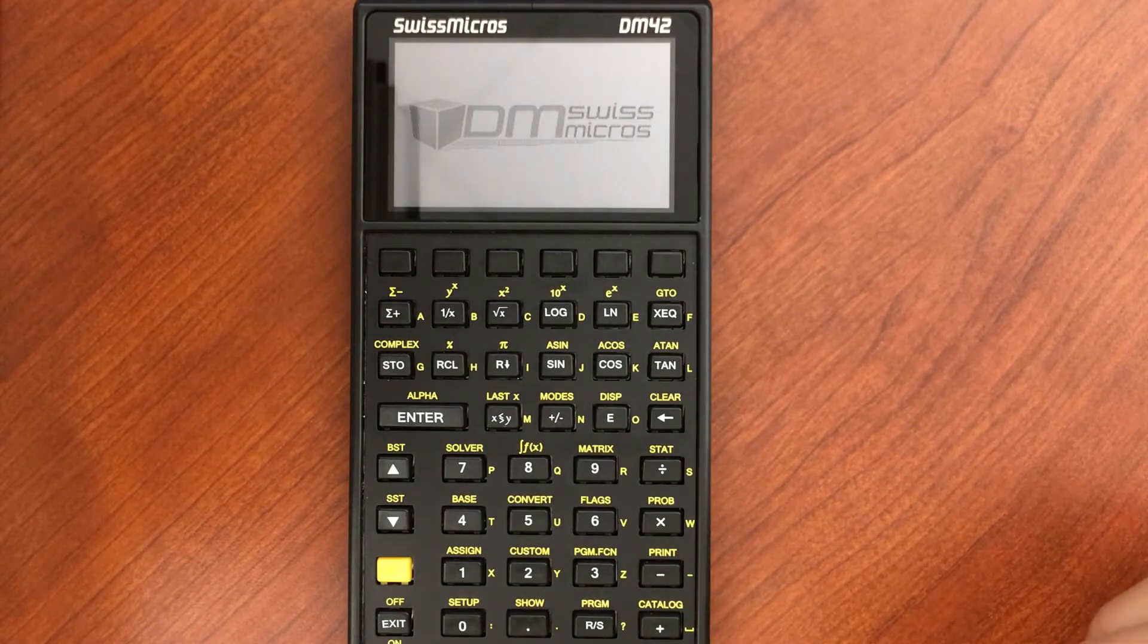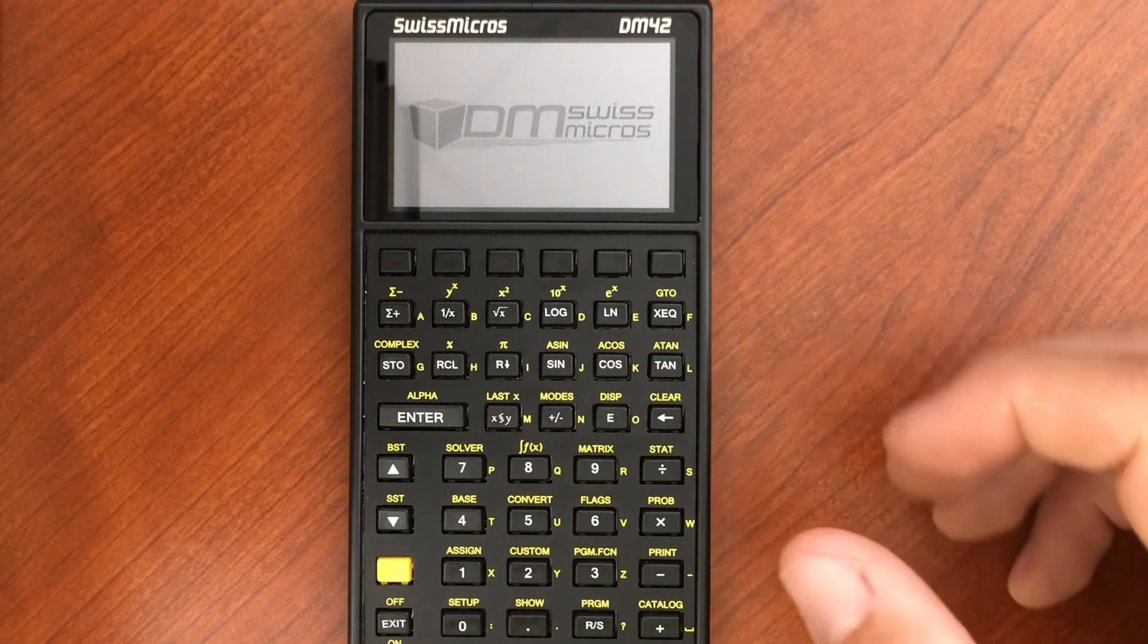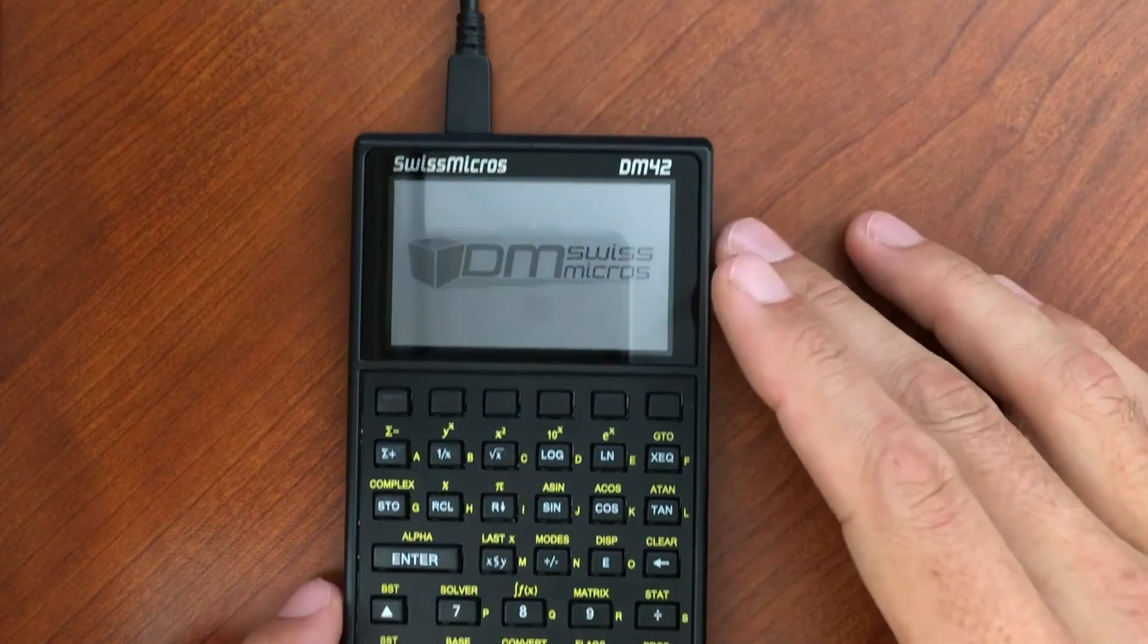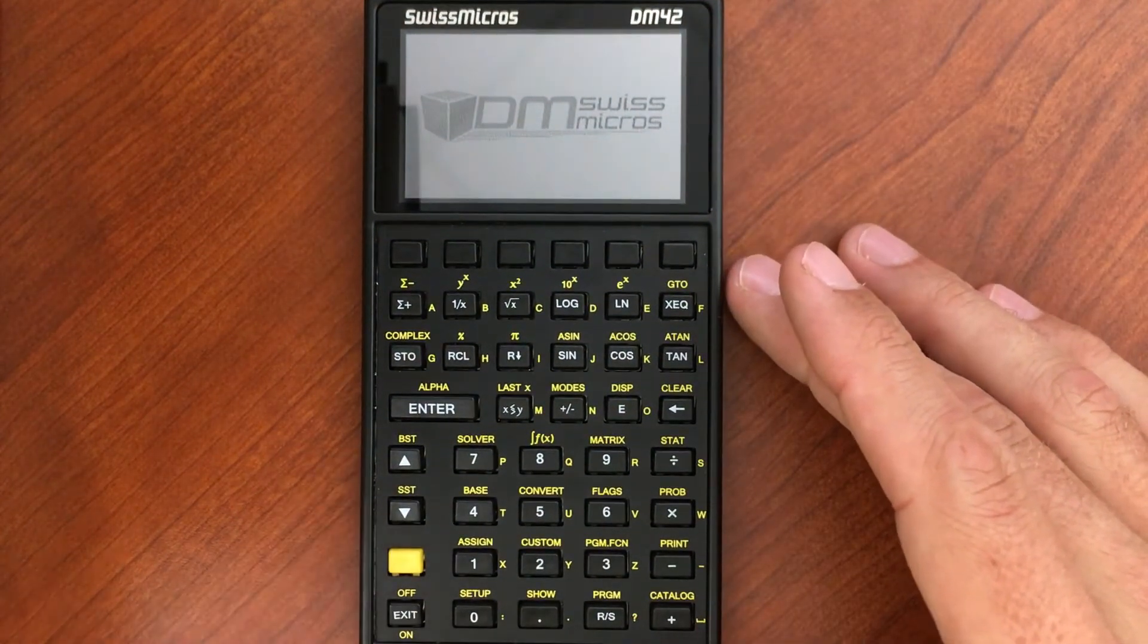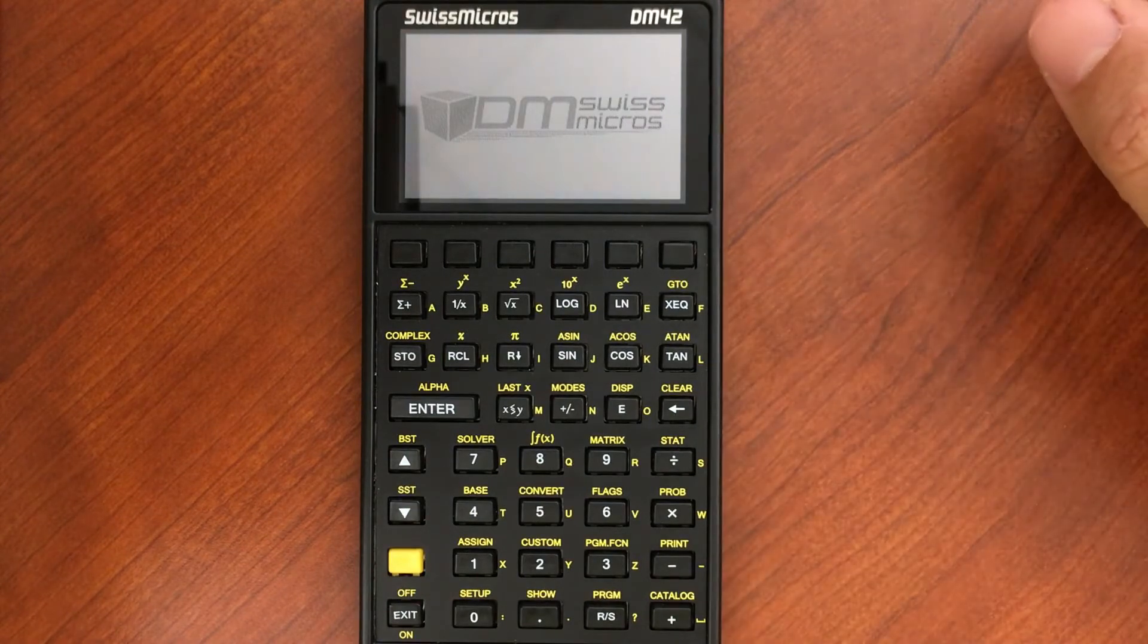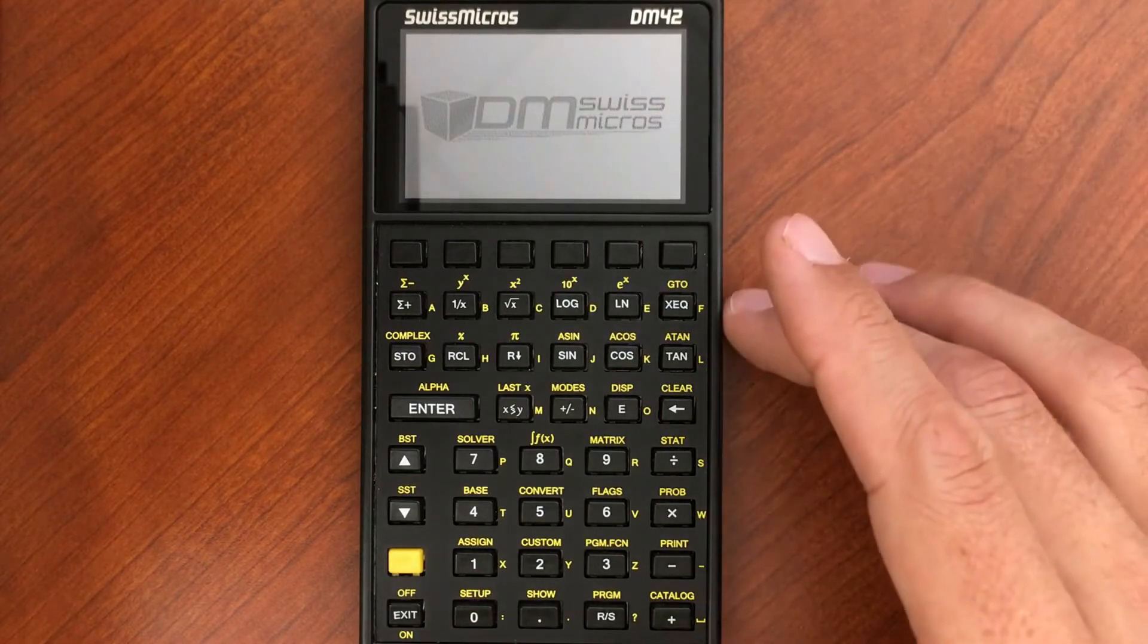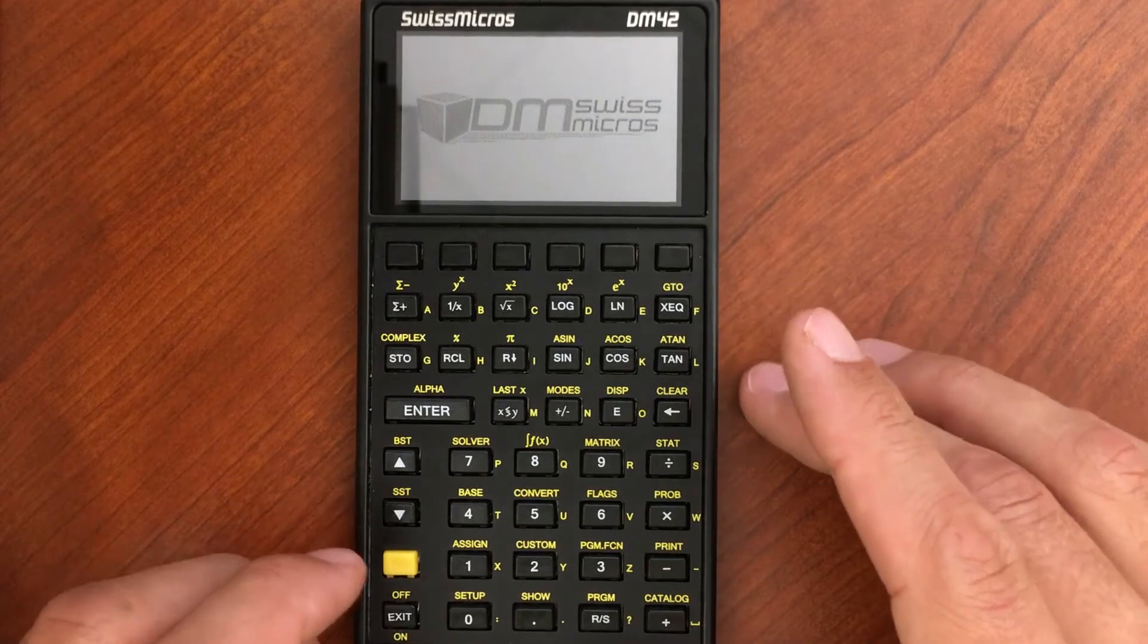If there is one advantage that the DM42 has over the HP42, it would be the ability to connect via a USB cable to your computer and then save backup programs. You don't have to type in a program if someone else has developed it. They've shared the file and you can just load it right onto your calculator without having to key in each command. So I'd like to demonstrate that functionality.